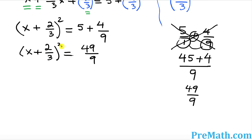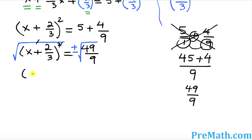The next step is to get rid of the square so we can solve for x. We take the square root on both sides. The square and square root undo each other, giving us x plus 2 over 3 equals plus or minus 7 over 3, since the square root of 49 is 7 and the square root of 9 is 3.